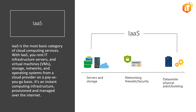Starting with infrastructure as a service: IaaS is the most basic category of cloud computing services. With IaaS, you rent IT infrastructure — servers and virtual machines, storage, network, and operating systems — from a cloud provider on a pay-as-you-go model. It is instant computing infrastructure provisioned and managed over the internet.